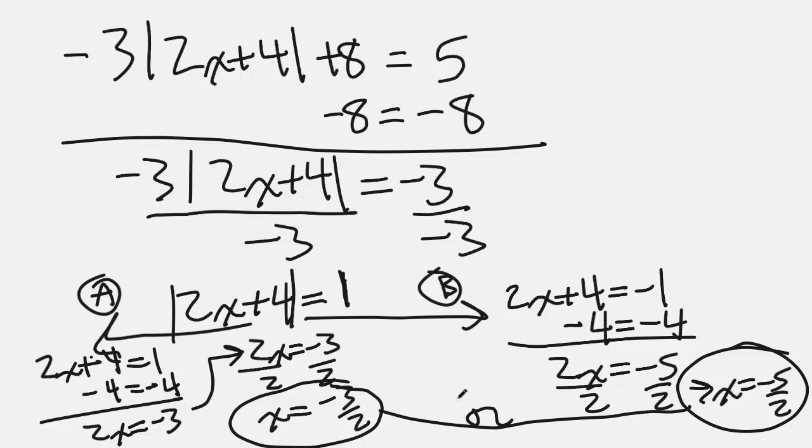So, and again, we're going to say for our final two answers here, it's going to be x equals negative 3 over 2 or x equals negative 5 over 2.